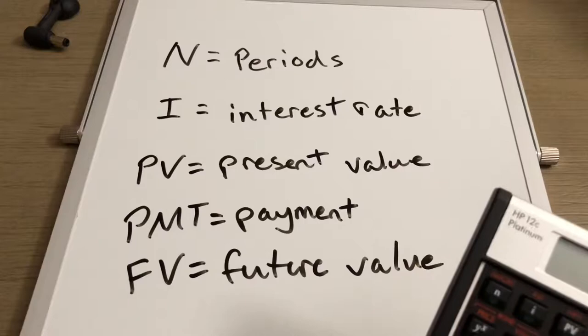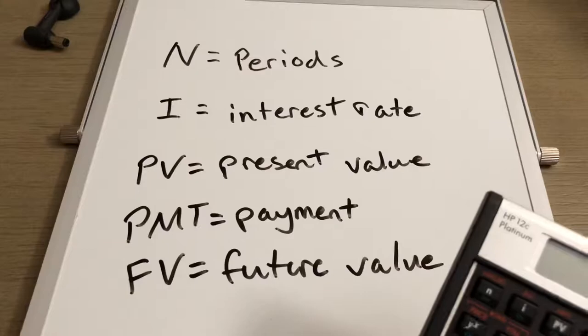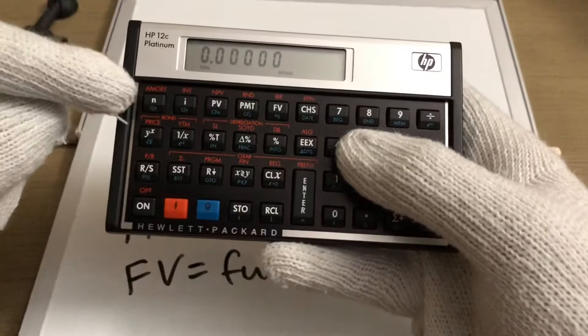This video is an introduction to the TVM keys, which are the time value of money keys on the HP 12C Platinum. Let's turn it on. N is going to be your number of periods, I is your interest rate, PV is present value, and PMT is going to be your payment.